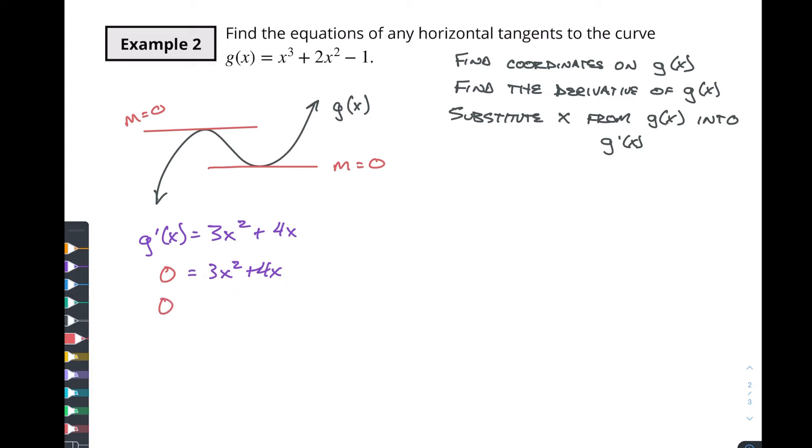So zero is going to equal x times 3x plus 4. So using the idea of the null factor law that says that either x has to equal zero or 3x plus 4 has to equal zero, here's one of our spots right here with one of the x values that's going to give us either one of these two spots where we have a horizontal slope. And the other spot is going to be at x equals negative 4 thirds.